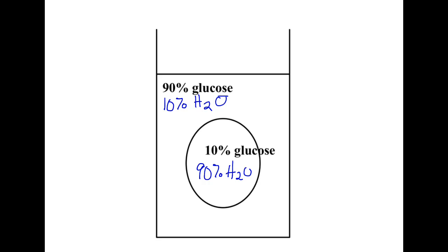So decide where the water wants to go. Water wants to go from a high concentration to a low concentration. 90 is greater than 10, so water will move out of the cell.